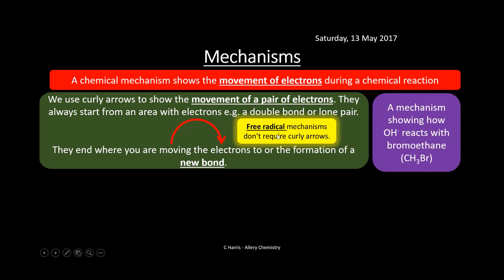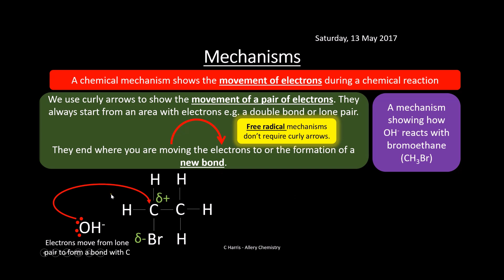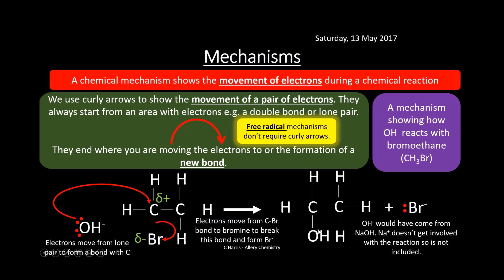Here's a mechanism showing how OH- reacts with bromoethane. The electrons move from the lone pairs on OH- to form a bond with the carbon. The other arrow shows electrons moving from the C-Br bond into the bromine — this is the breaking of that bond. The arrow shows the direction of electrons. The result is that OH is now bonded to the carbon, forming an alcohol, while the C-Br bond breaks leaving bromide ions behind.